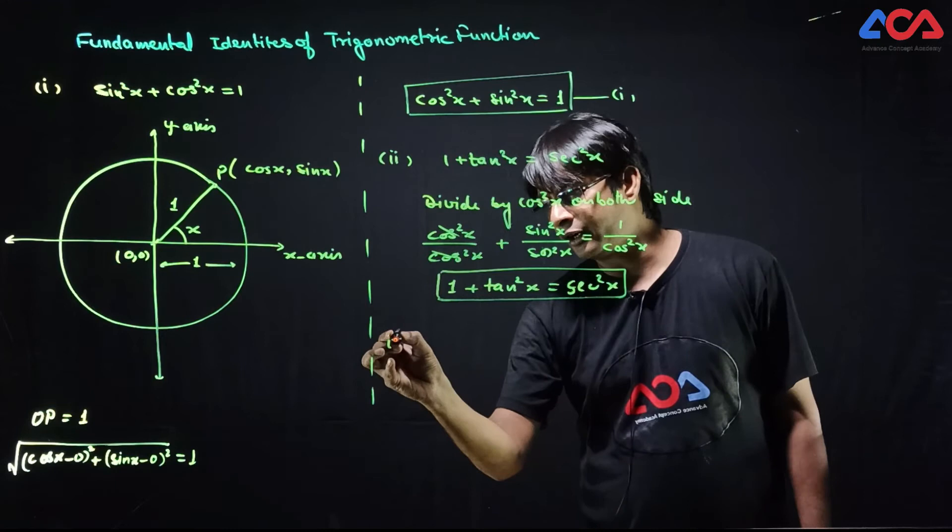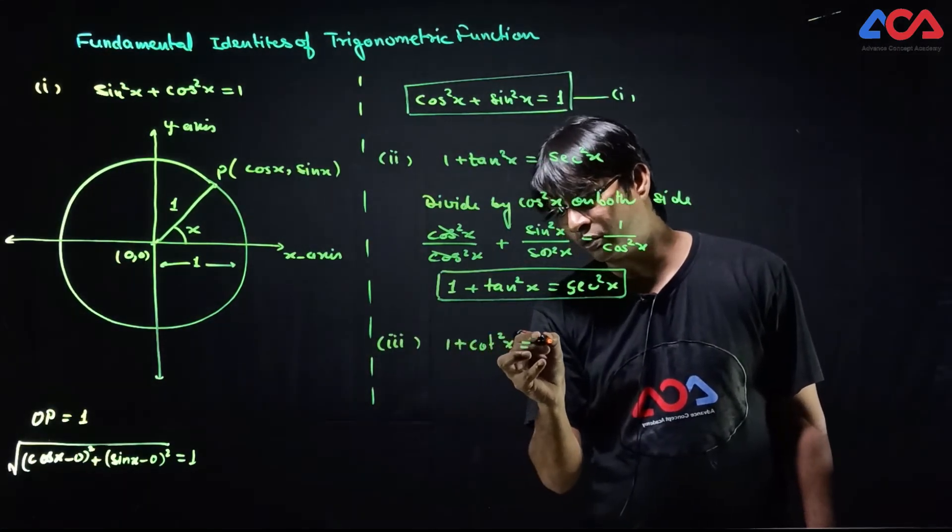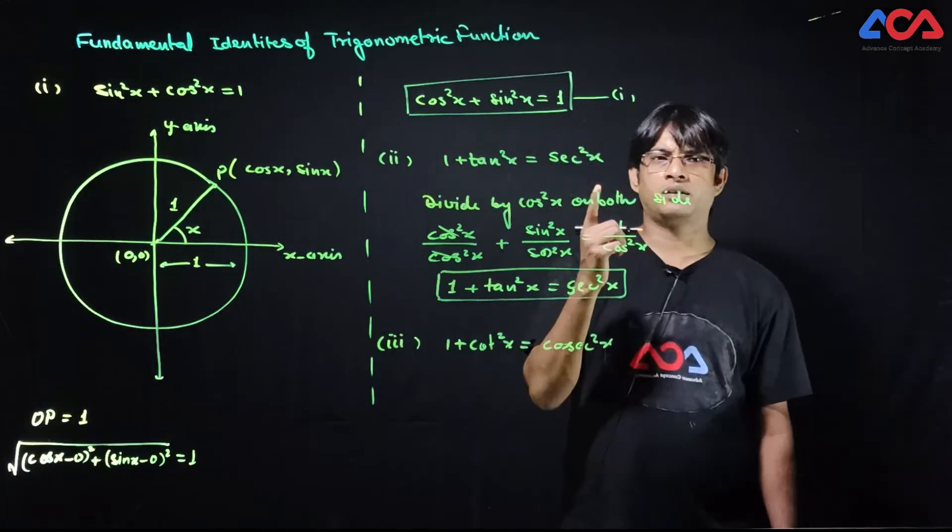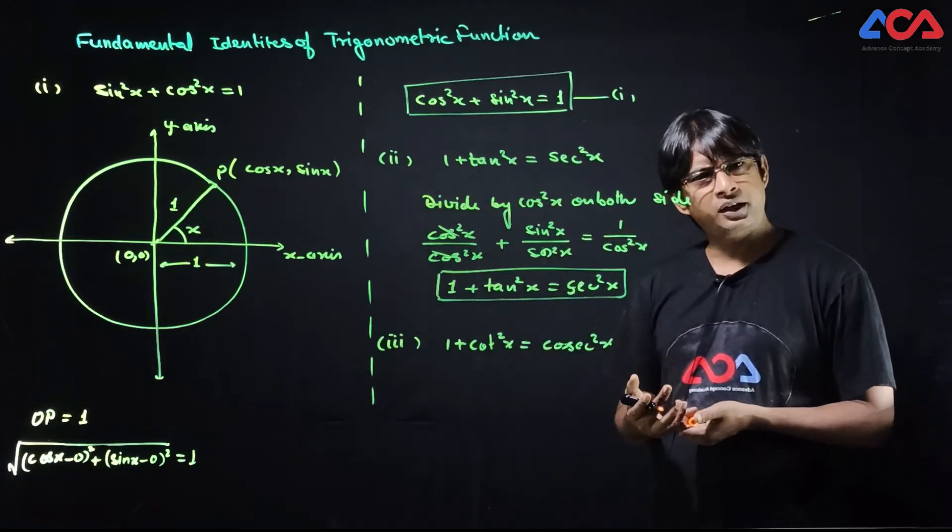Third identity is 1 + cot²x = csc²x. What do we do? In equation 1, we divide both sides by sin²x.